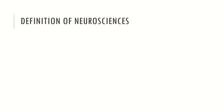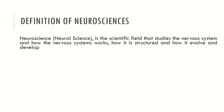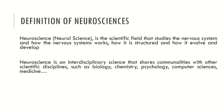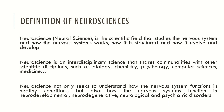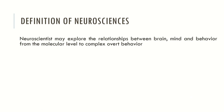Neuroscience, or Neural Science, is the scientific field that studies the nervous system — how it works, how it is structured, and how it evolved and developed over time. Neuroscience is an interdisciplinary science that shares commonalities with other scientific disciplines such as biology, chemistry, psychology, computer sciences and medicine. Neuroscience not only seeks to understand how the nervous system functions in healthy conditions, but also studies how it functions in neurodevelopmental, neurodegenerative and psychiatric disorders. Neuroscientists may explore the relationships between brain, mind and behavior from the molecular level to complex overt behavior.